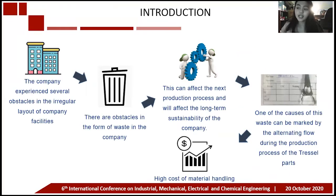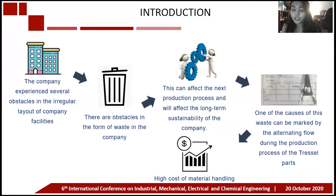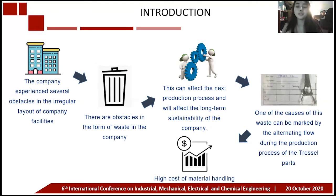After observing, the company experiences several obstacles in the irregular layout of company facilities. There are obstacles in the form of waste in the company. Waste here is the output generated from the production process that is not by the plan — meaning not optimum enough. This can affect the next production process and will affect the long-term sustainability of the company. One of the causes of this waste can be marked by the alternating flow during the production process of trestle park, producing high material handling costs.